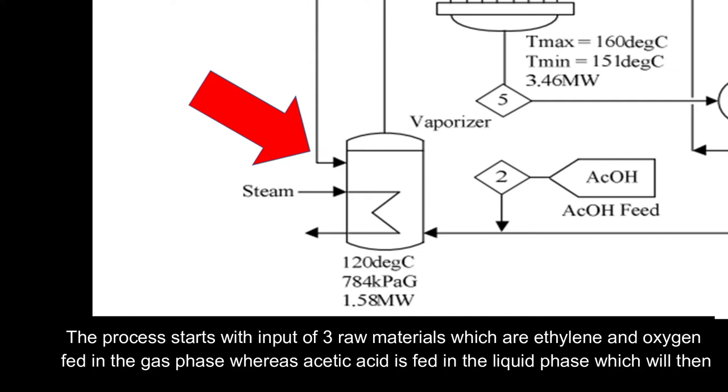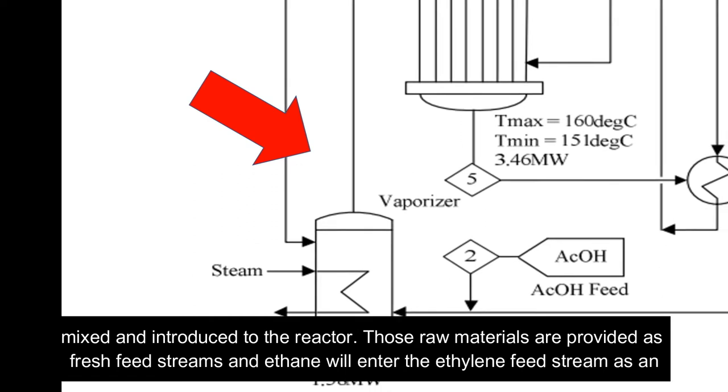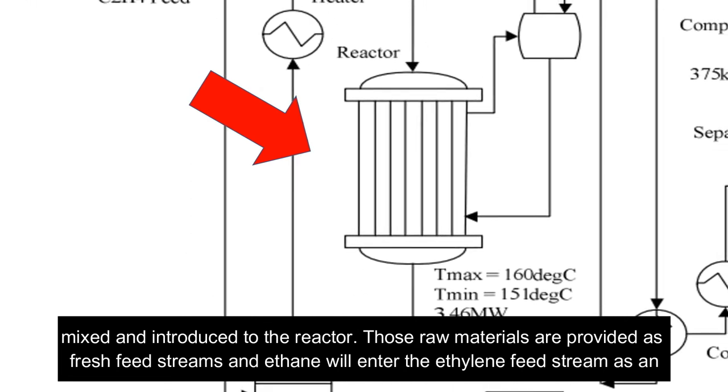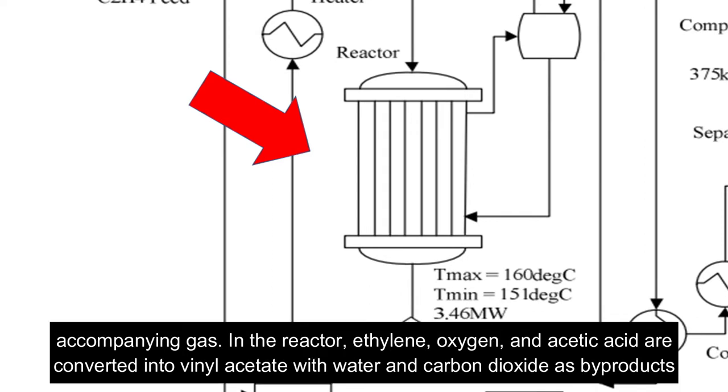Acetic acid is fed in the liquid phase, which will then be mixed and introduced to the reactor. These raw materials are provided as fresh feed streams, and ethane will enter with the ethylene feed stream as an accompanying gas. In the reactor, ethylene, oxygen, and acetic acid are converted into vinyl acetate with water and carbon dioxide as byproducts. Both reactions are exothermic.